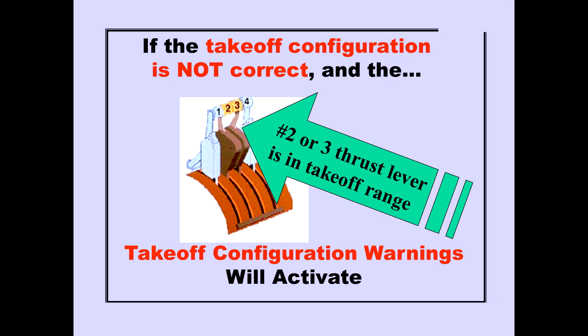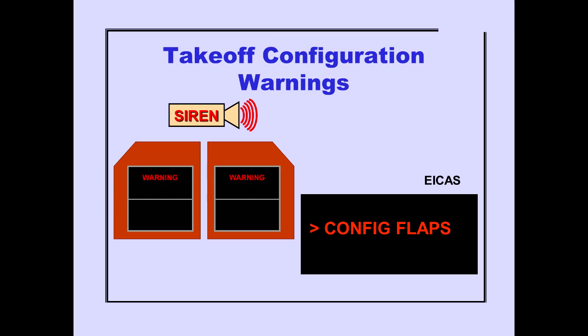If the airplane is not properly configured for takeoff and engine 2 or engine 3 thrust is increased to the takeoff range, the takeoff configuration warning activates. The warning consists of activation of the warning siren, illumination of the master warning lights, and an ICAS warning message. The warning remains until the configuration error is corrected.